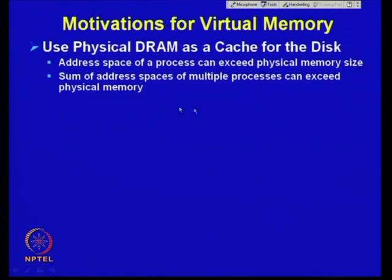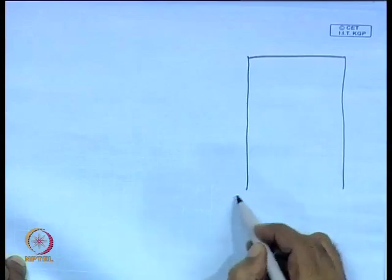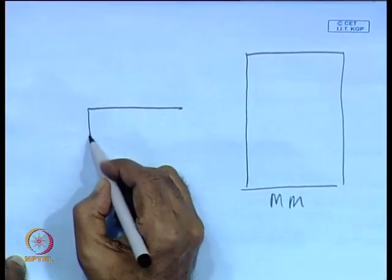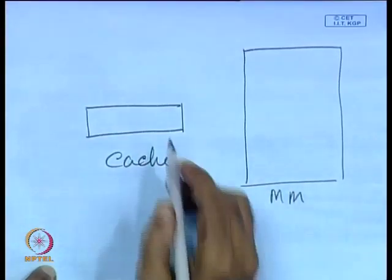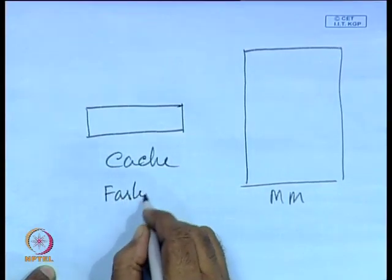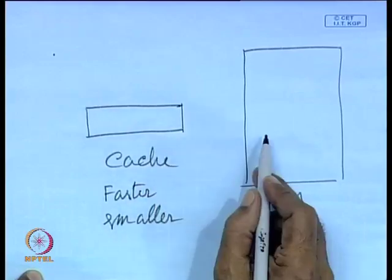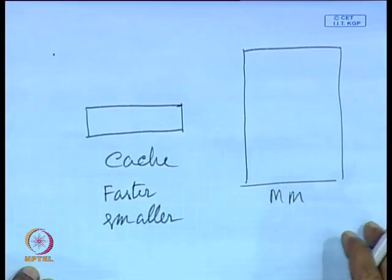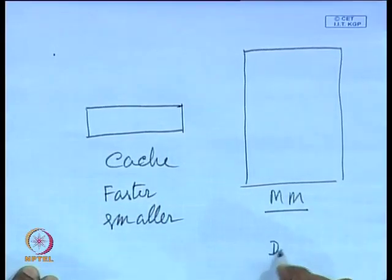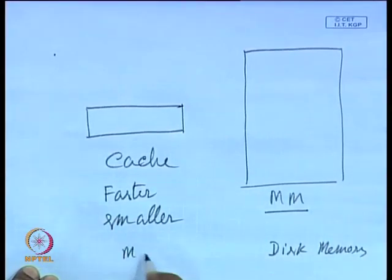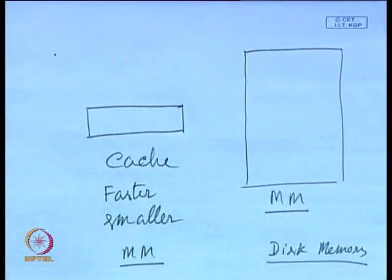Virtual memory uses physical DRAM as a cache of the disk — the cache memory of disk. Just as cache memory is faster and smaller than main memory, now we go for another level where disk memory is the backing store and main memory is considered the cache of disk memory. The address space of a process can exceed physical memory size, so the restriction that a program must be smaller than main memory no longer applies.